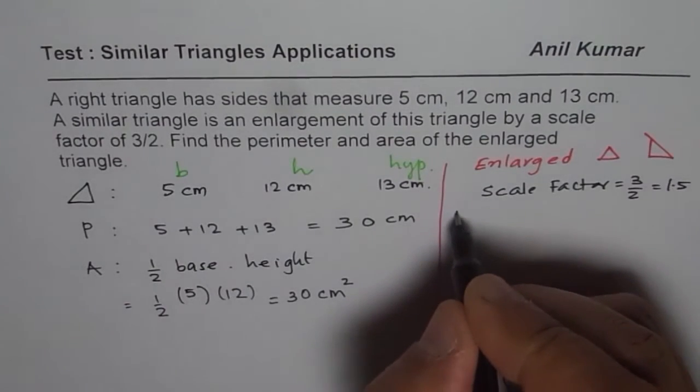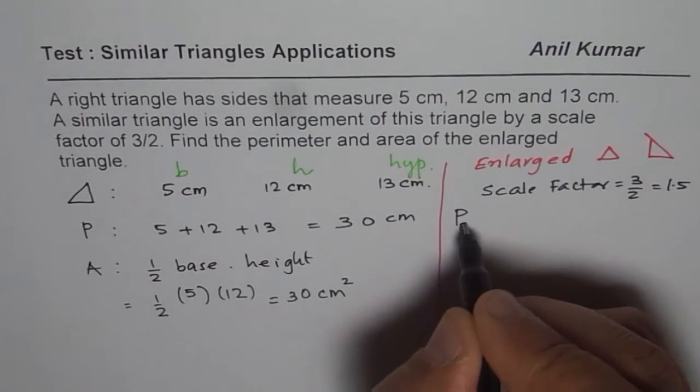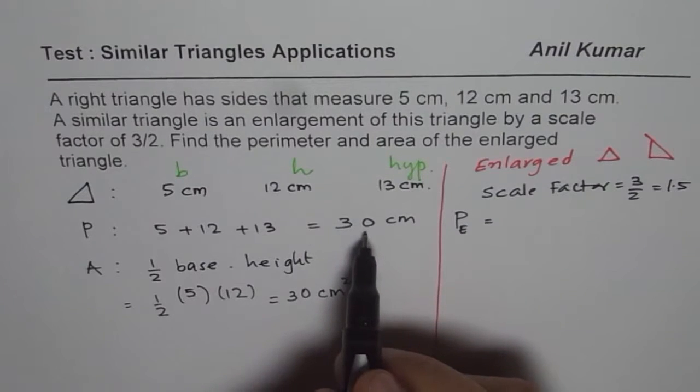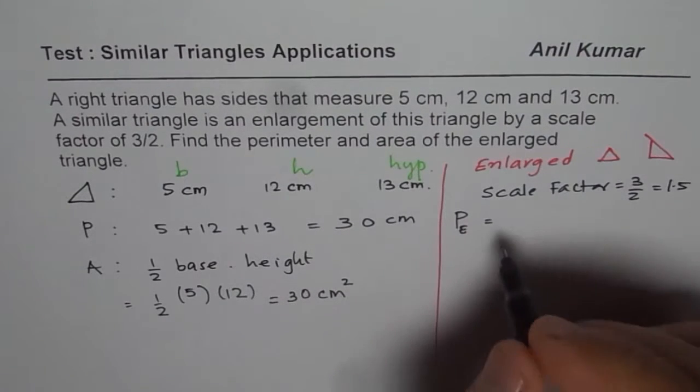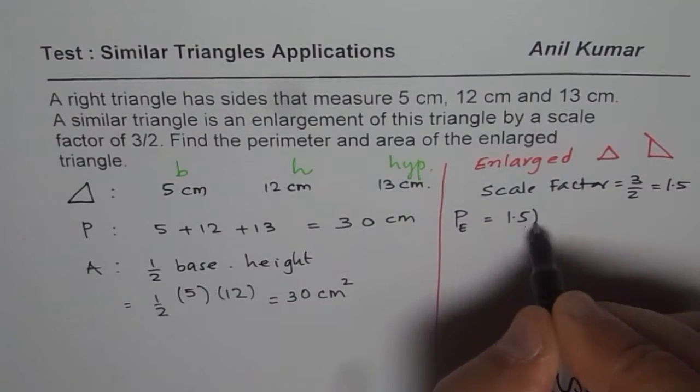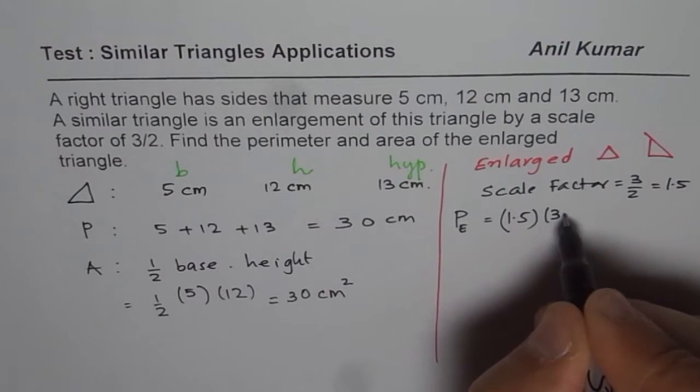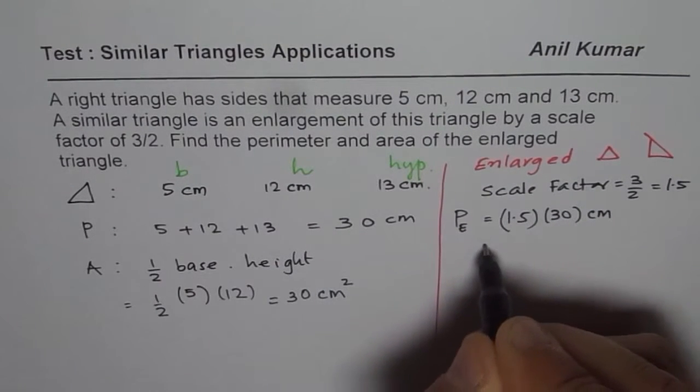So what is the perimeter for the enlarged triangle, the big triangle? The perimeter will be 1.5 times 30. So we could actually straight away multiply this by 1.5. Do you understand?